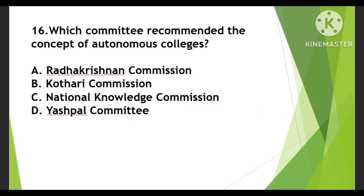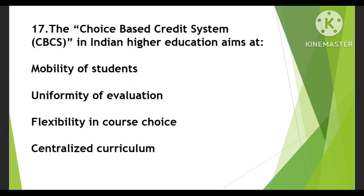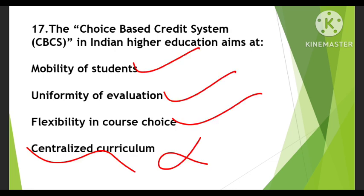Next question: Which committee recommended the concept of autonomous colleges? Options are Radhakrishnan, Kothari, National Council Commission, or Parliamentary Commission. The right answer is B, Kothari Commission. Next: The Choice Based Credit System in Indian higher education aims at — mobility of students, uniformity of evaluation, flexibility in course choice, or centralized curriculum. Centralized curriculum is not an objective of CBCS — that option is wrong.